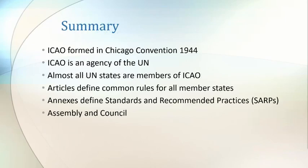In summary, ICAO was formed from the Chicago Convention of 1944. It is an agency of the UN, and almost all members of the UN are also members of ICAO. ICAO articles define common rules that all member states must adhere to, and ICAO annexes define standards and recommended practices. We also looked at the structure of ICAO, how it forms an assembly, and how this assembly forms a council. Links to relevant sections of the ICAO website are in the description. In the next few videos, we will begin looking at each of the ICAO articles and understanding how they affect aviation. If you have any questions or corrections, please leave a comment below. Thanks for watching.